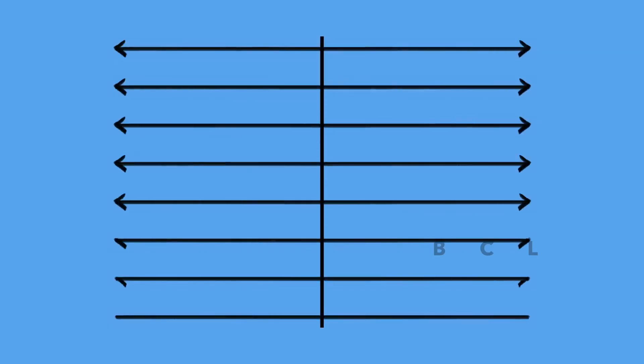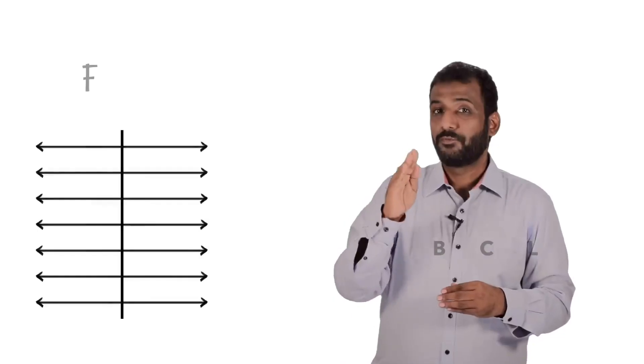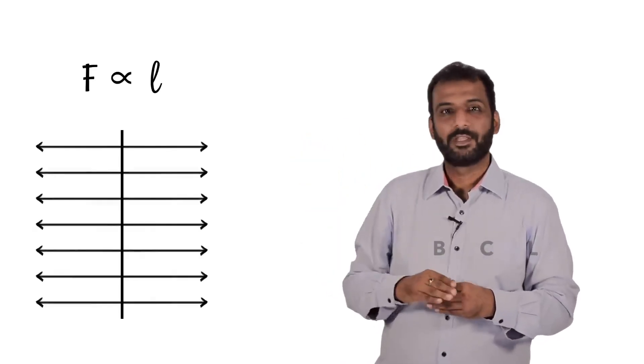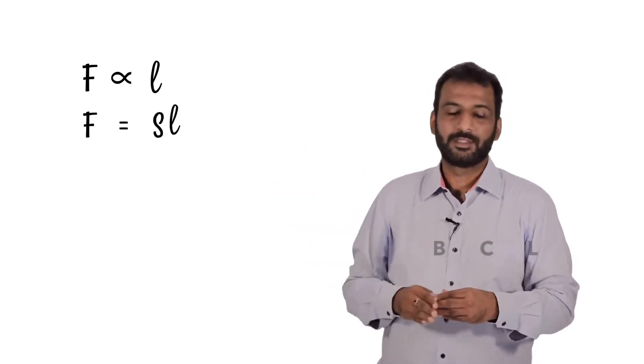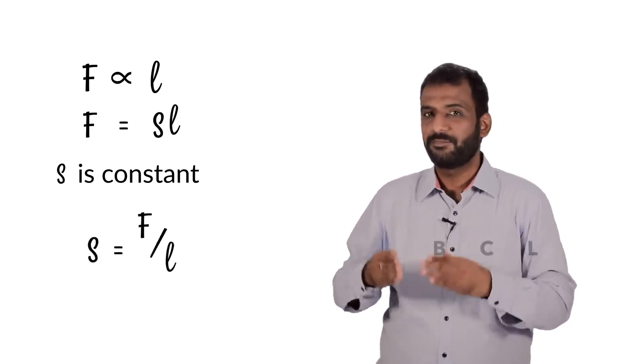If the length of the imaginary line increases, then the force also increases. So force is proportional to the length of the imaginary line. Then F is equal to some constant S into L. The constant S is actually equal to F by L, is also called surface tension. It's a property of the liquid which is measured by this quantity called surface tension, equal to force per unit length. This force is nothing but the intermolecular forces of the liquid, which we also call cohesive forces. So the surface tension is only because of intermolecular cohesive forces.